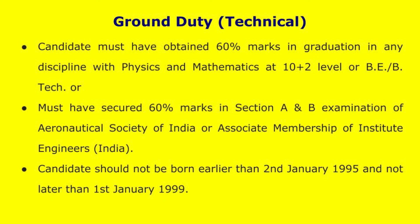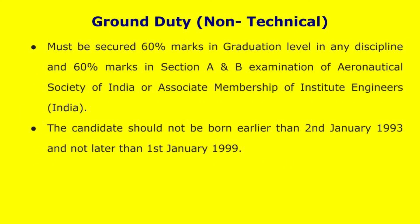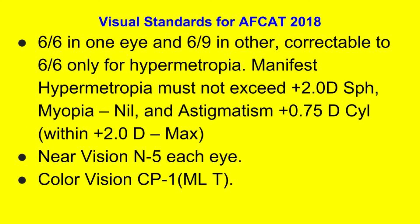Candidate should not be born earlier than 2nd January 1993 or not later than 1st January 1999. Visual standards of FCAT 2018 for the Flying Branch are on your screen. Candidate must secure 60% marks in graduation level in any discipline and 60% marks in Section A and Section B of Aeronautical Society of India or Associate Membership of Institute of Engineering India.